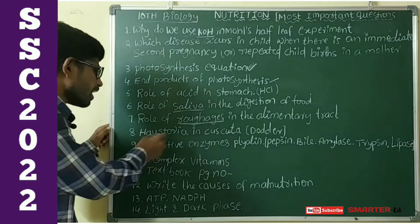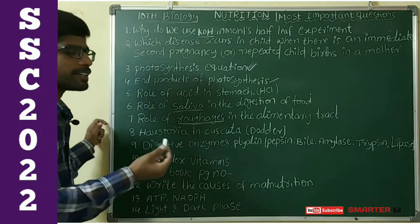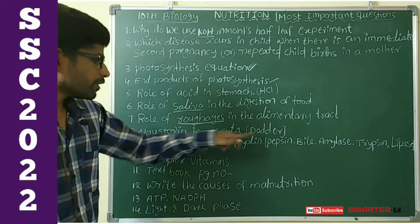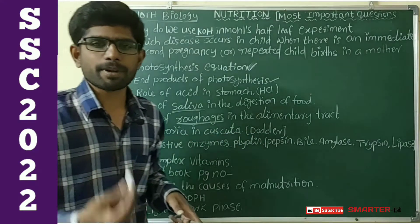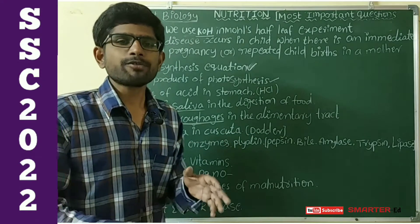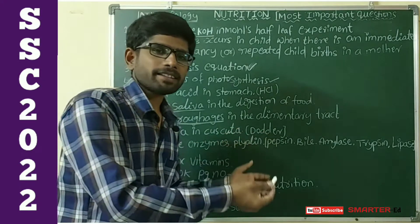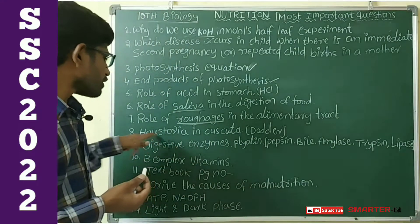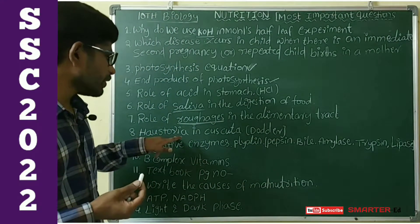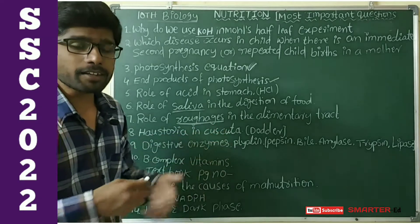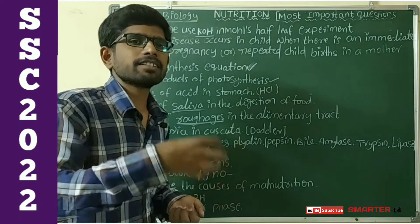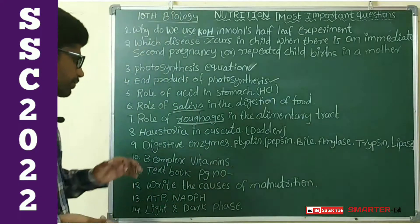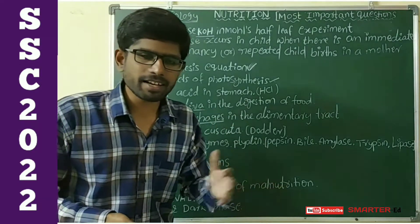Next, haustoria in Cuscuta — the daughter plant. Cuscuta is a parasitic plant. How does nutrition occur in a parasitic plant? With the help of haustoria, they collect food. This is important and sometimes they will ask this indirectly.